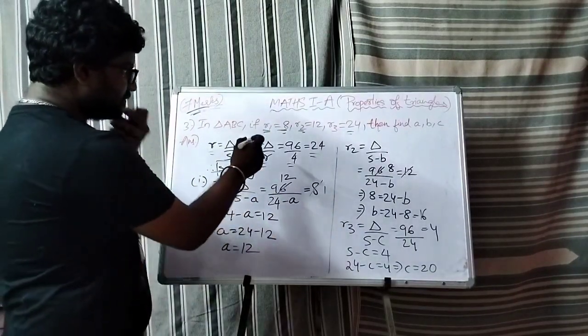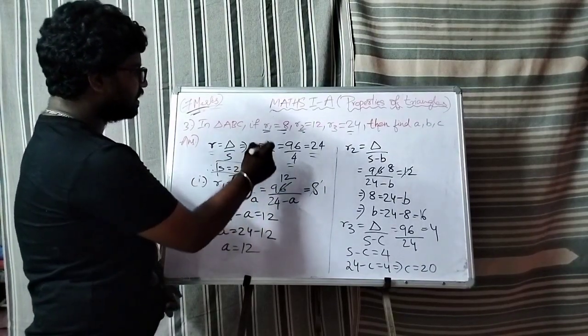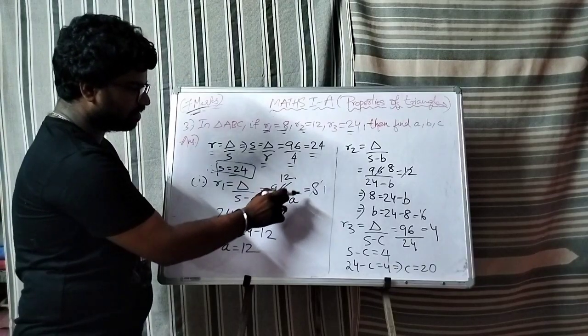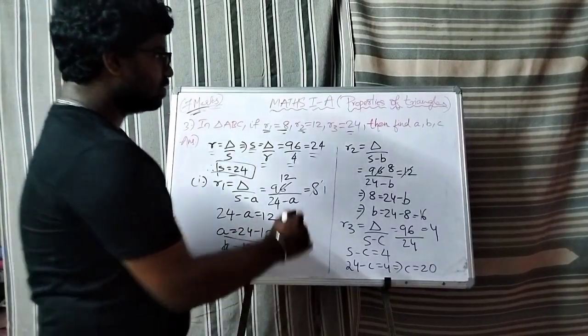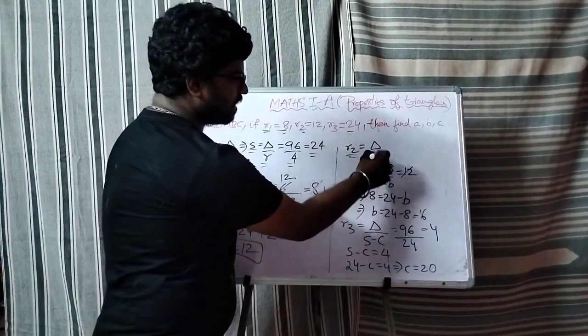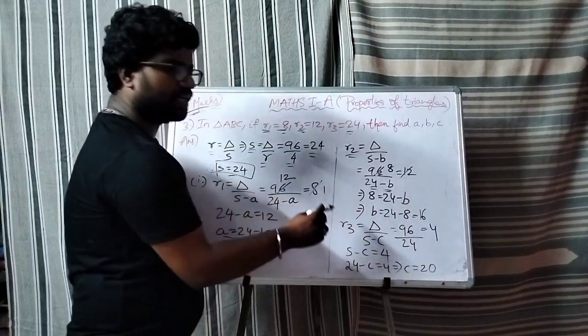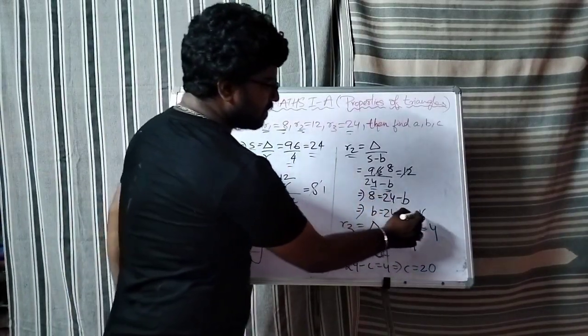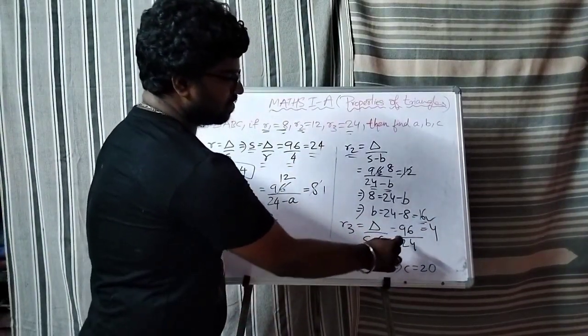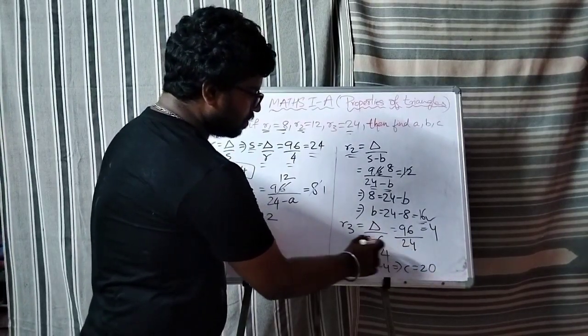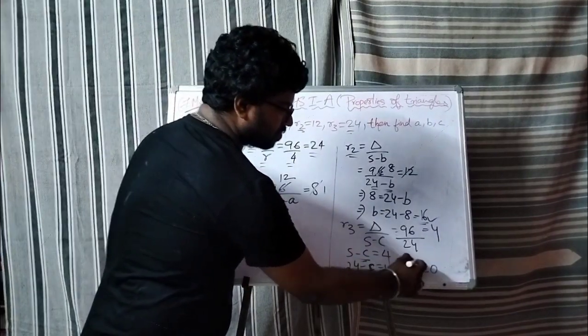Next r1 is delta by s minus a. Delta is 96, so 96 by 24 minus a equals 8, giving a equals 16. Similarly r2 gives 24 minus b equals 12, so b equals 16. And r3 gives 24 minus c equals 4, so c equals 20.